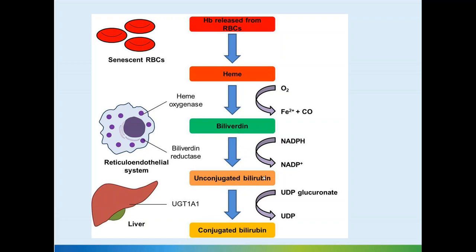Bilirubin released is bound to albumin. When albumin is exceeded in the plasma, free bilirubin circulates, which is dangerous as it can easily cross the blood-brain barrier. Unconjugated bilirubin is then taken up by the liver where UDP-glucuronyl transferase causes conjugated bilirubin, which gets excreted through bile into the stool. Part of the conjugated bilirubin gets acted on in the intestines and may get reabsorbed.